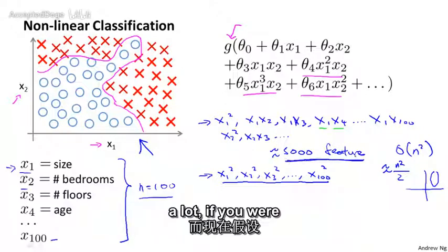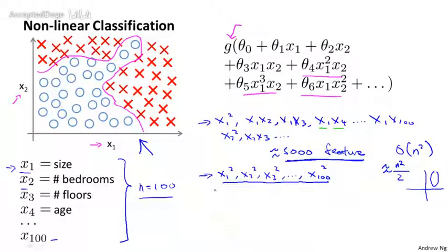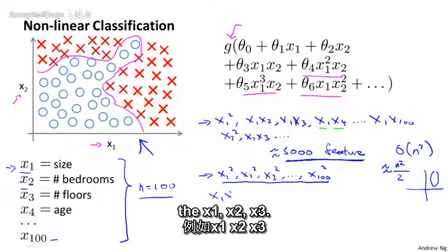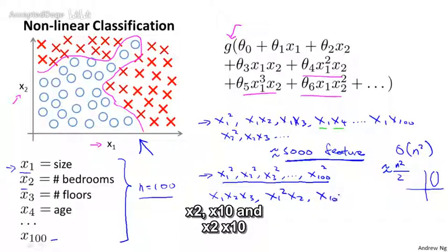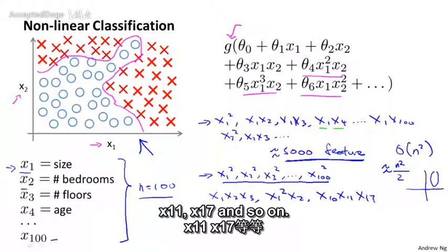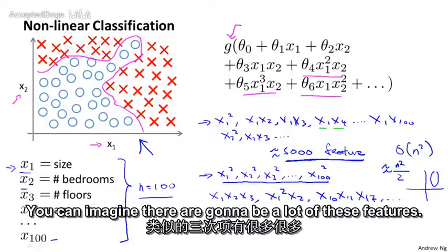So 5000 features seems like a lot. If you were to include the cubic or third order polynomial features, x1 x2 x3, x1 squared x2 x10, x11 x17, and so on, you can imagine there are going to be a lot of these features. In fact, they're going to be order n cubed such features.